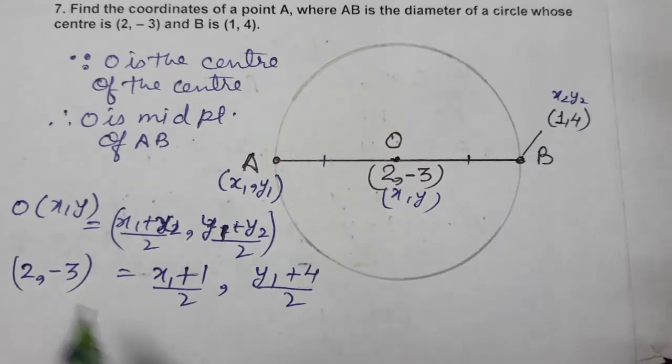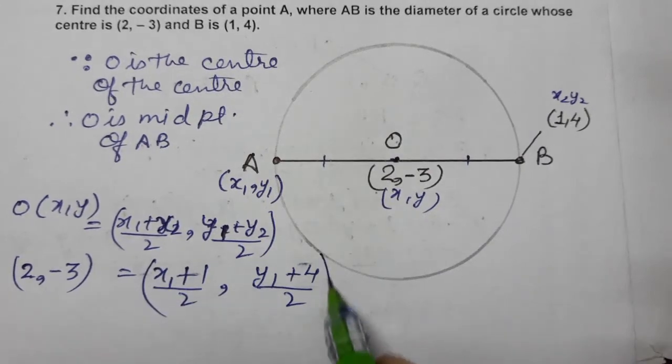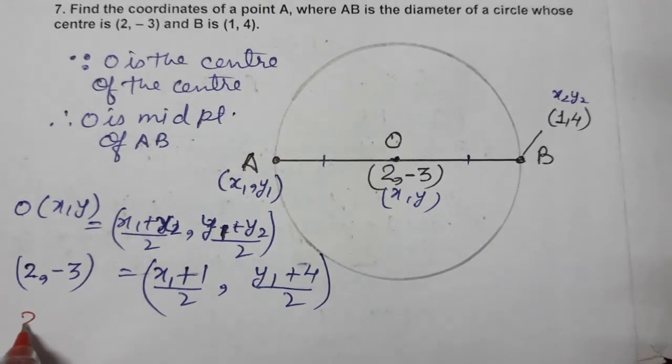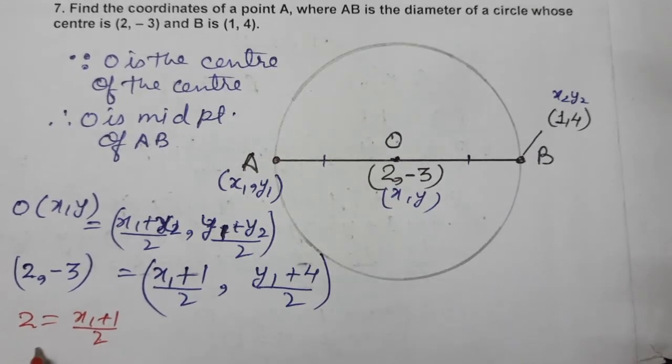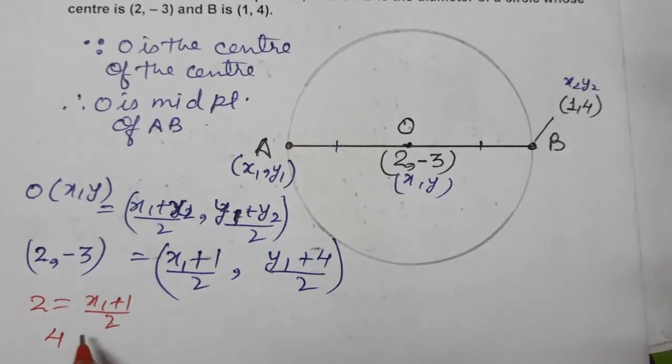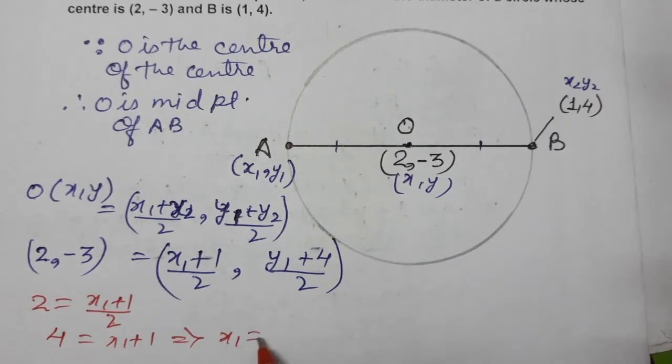Comparing the x-coordinates, we get 2 equals (x1 plus 1) by 2. Multiplying by 2, we get 4 equals x1 plus 1, which implies x1 equals 4 minus 1, so x1 equals 3.